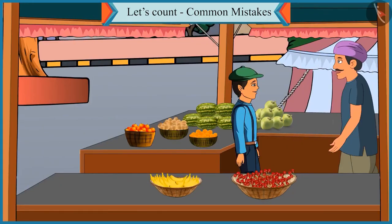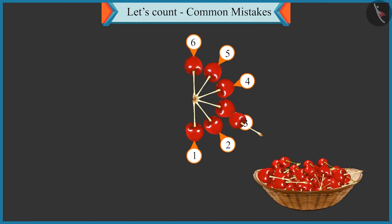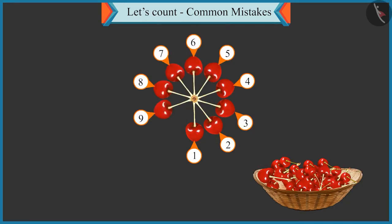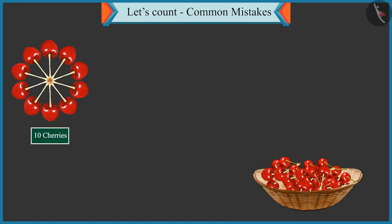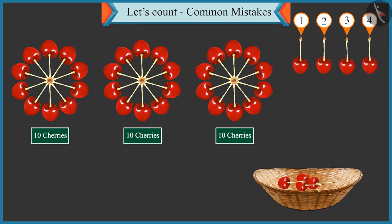Chotu, you know how to make groups of tens. Nine and ten — first group of ten, second group of ten, and this is the third group of ten. One, two, three, four, five, six, seven and eight.